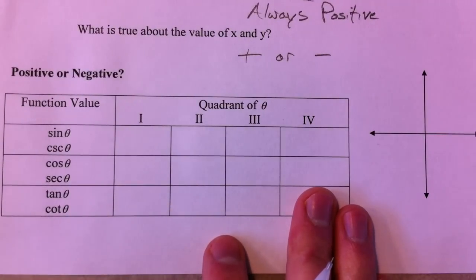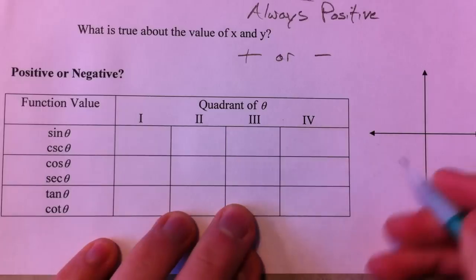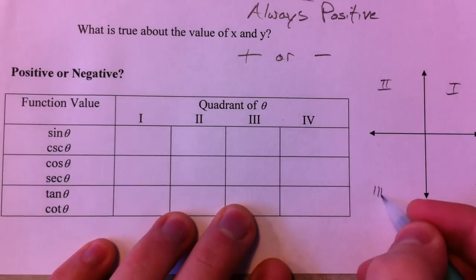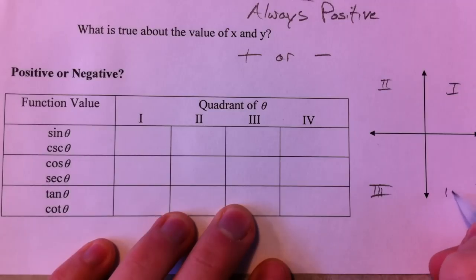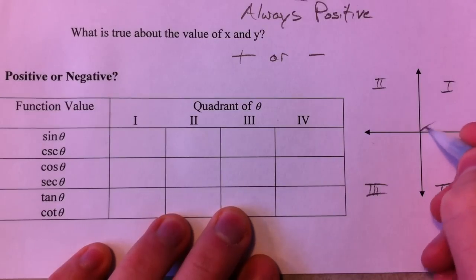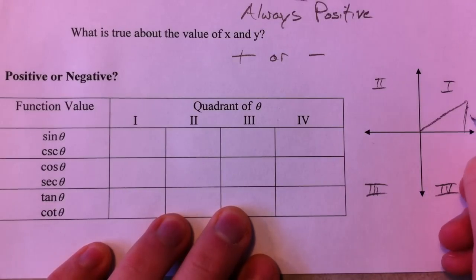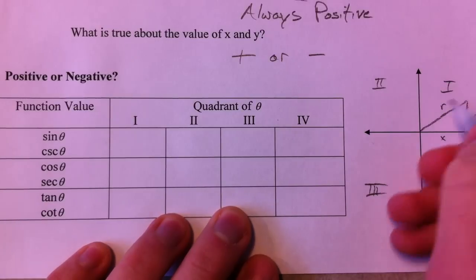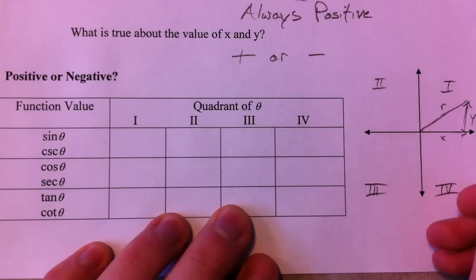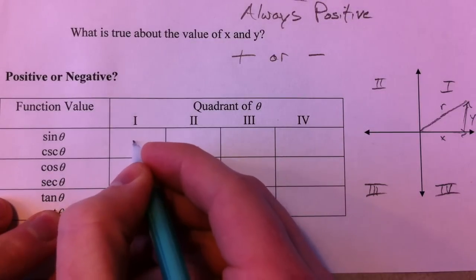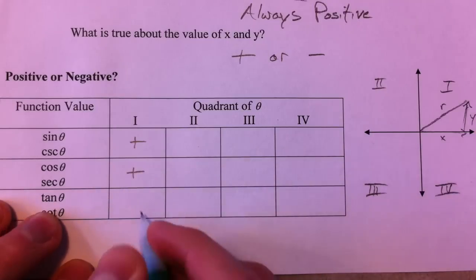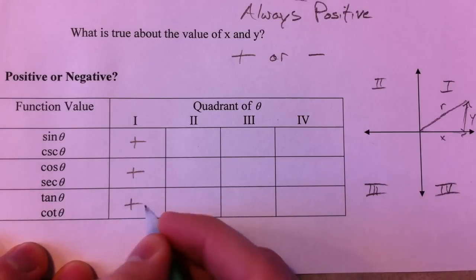Think about going around the quadrants. We label them first, second, third, and fourth — we use Roman numerals. In the first quadrant, imagine your triangle: you have your y, your x, and your R — all of them are positive. We've gone to the right so x is positive, we've gone up so y is positive. The sine value is going to be positive, the cosine is the x and is positive, and y divided by x is positive as well.